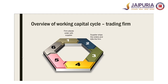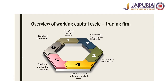Next, the supplier will ship the order and bill the firm. The third step is about shipment — once shipment is received by the firm, it goes into inventory. The fourth step is the customer places the order and the firm bills the customer. Next, the customer settles his account, and finally the supplier's bill is settled. Note that step 5 and step 6 may have interchangeable positions — customers' accounts may be settled later and suppliers may be paid before customers pay, depending on business scenario and industry practices.